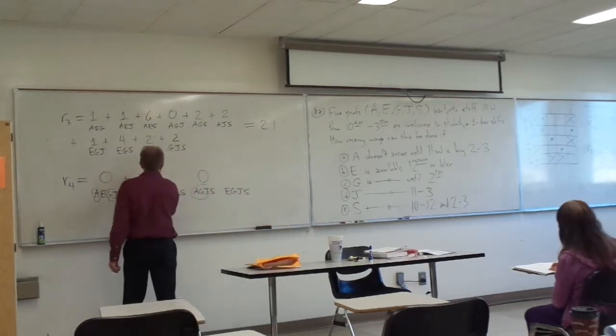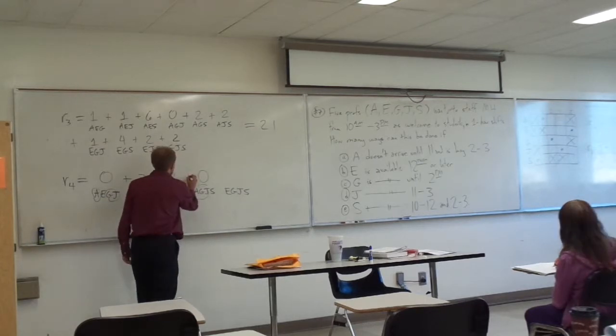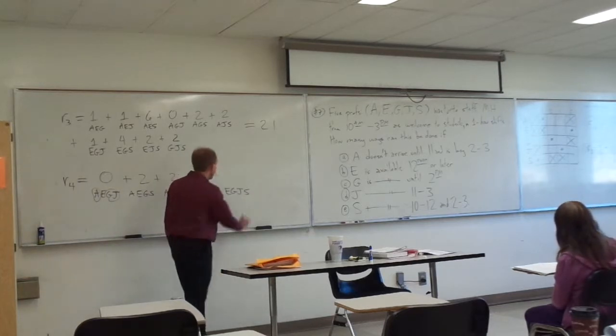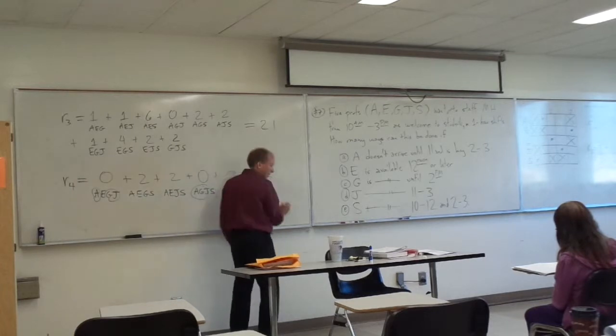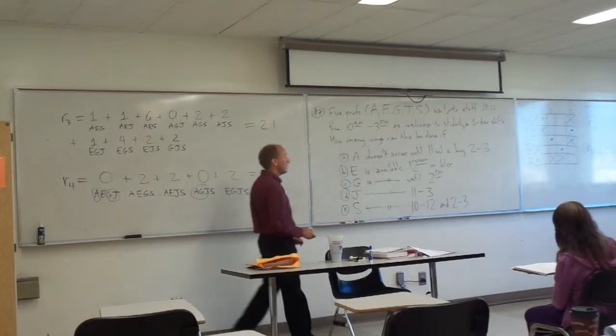Alright, how about A, E, J, S? 2. Everybody get 2? You're all getting the same answer, so I'm not going to stop and look at it. Alright, how about E, G, J, S? 2. Everybody get 2? So that adds up to 6. Let's see if that's my answer. That is my answer. Yes, that looks right. So we got 6.